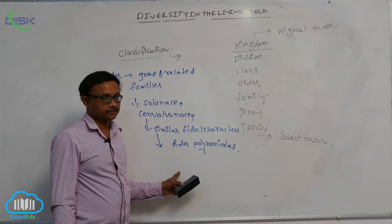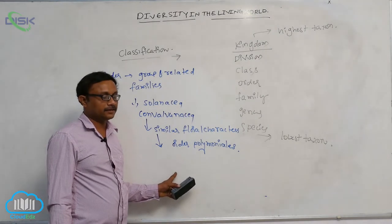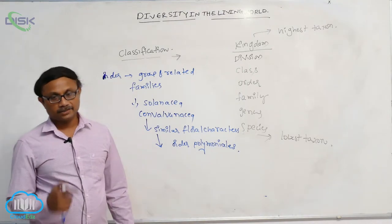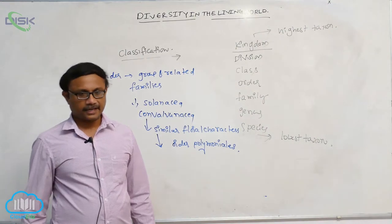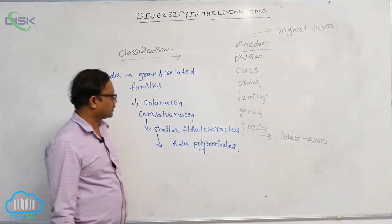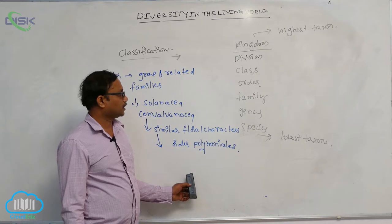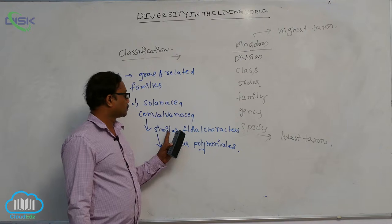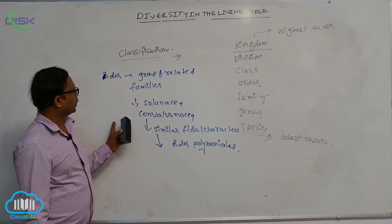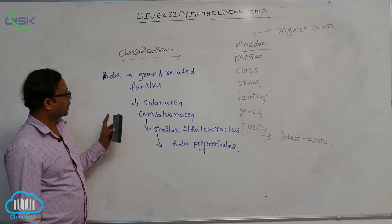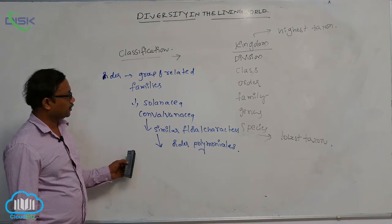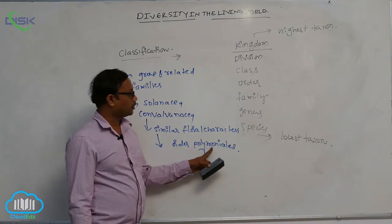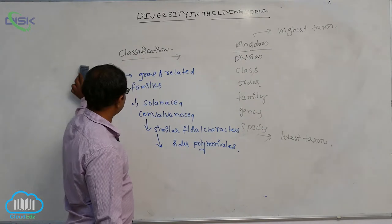Compared to family, only a few characters are common. The sequence is: species has the most common characters, then genus, then family, then order. Order is one of the highest taxa in classification. In order, only floral characters are similar. Families or group of related families are known as that order.